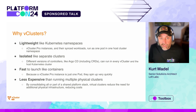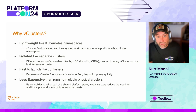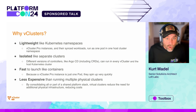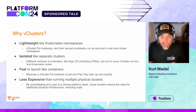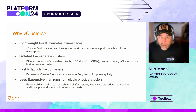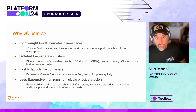Also, by using vClusters, we will reduce the load of the Kubernetes API server of the underlying host cluster. vClusters allow increasing workload of the host cluster while reducing load on that host cluster. Isolated like separate clusters, different versions of controllers like Argo CD can run at every vCluster. vClusters are fast to launch like containers because a vCluster Pro instance is just one pod — they spin up very quickly. And vClusters are less expensive than running multiple physical clusters. You can consolidate part of the shared platform stack like an Ingress controller, so you don't have to install it in every single vCluster, reducing physical infrastructure and costs.